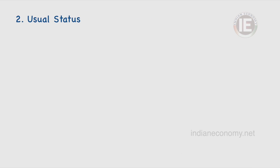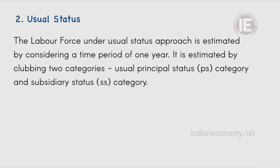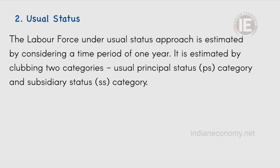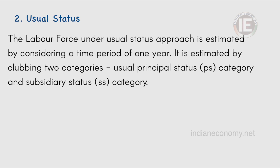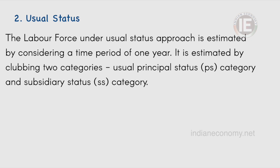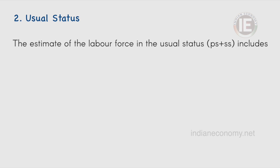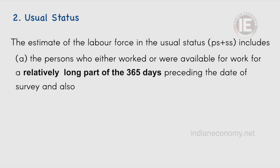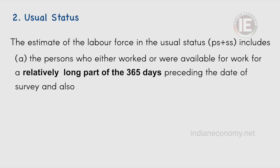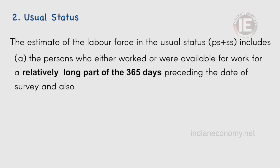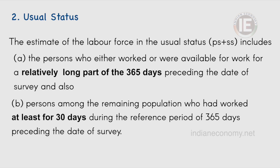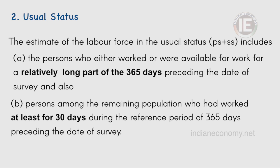The labor force under usual status approach is estimated by considering a time period of 1 year. It is estimated by clubbing two categories: usual principal status category and subsidiary status category. The persons who either worked or were available for work for a relatively long period of 365 days preceding the date of survey, and persons among the remaining population who had worked at least for 30 days during the reference period.